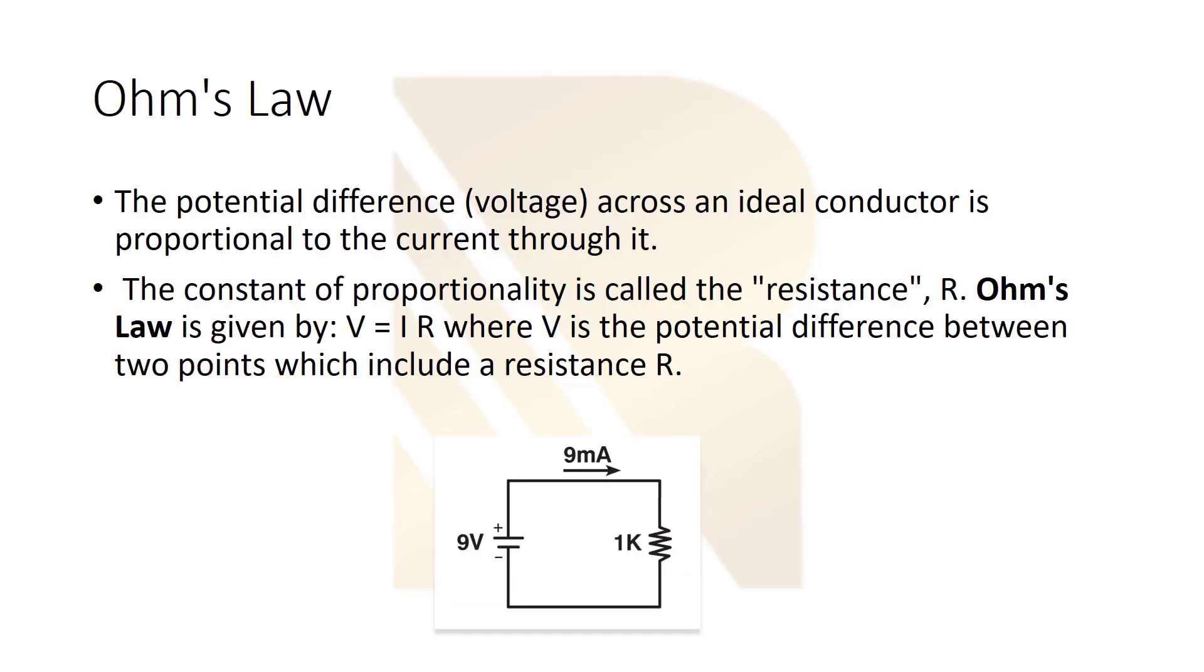So let's start with Ohm's law. Imagine the picture here, we have a resistance R and we have voltage. The potential difference across an ideal conductor is proportional to the current through it. As you see in this picture, we can say the voltage is equal to I times R according to Ohm's law. So when we connect this resistance to voltage potential we will produce a current, and this current is equal to V over R. Or we can say V is equal to R times I.